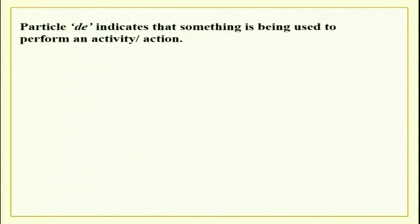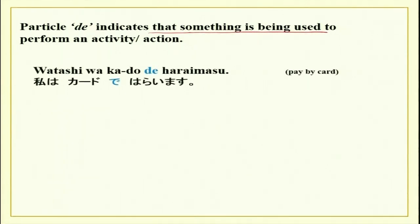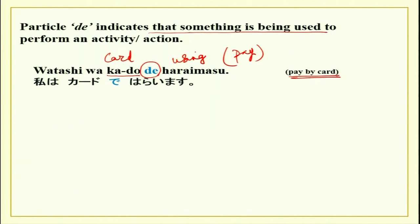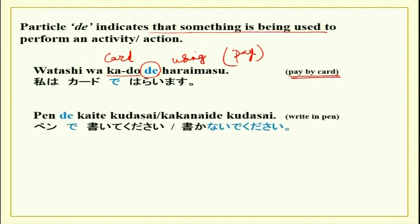The third usage of particle de is with the help of, or the means used to perform another activity. For example, pen de kakimasu. In your kaiva, watashi wa kado de haraimasu — with the help of your debit or credit card, I will pay. Kado de haraimasu, pen de kakimasu, spoon de tabemasu. We have done this earlier.